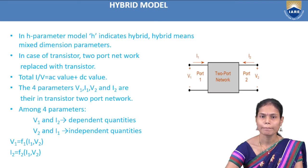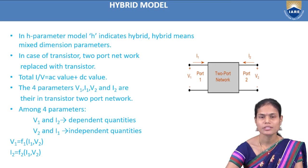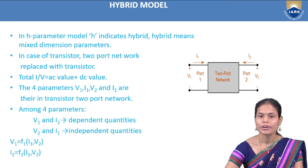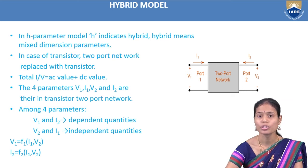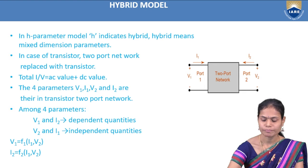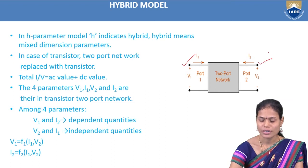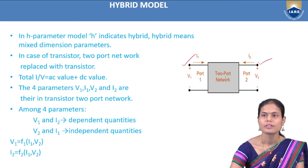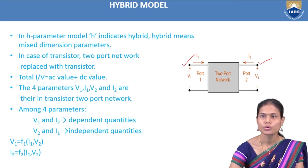Now, welcome to the hybrid model. The term 'hybrid' means mixed signal — a combination of voltage and current parameters. In the case of a transistor, we have two junctions, so we can use the transistor in the form of a two-port network. The input junction is port 1 and the output junction is port 2. We are replacing the transistor with the two-port network.